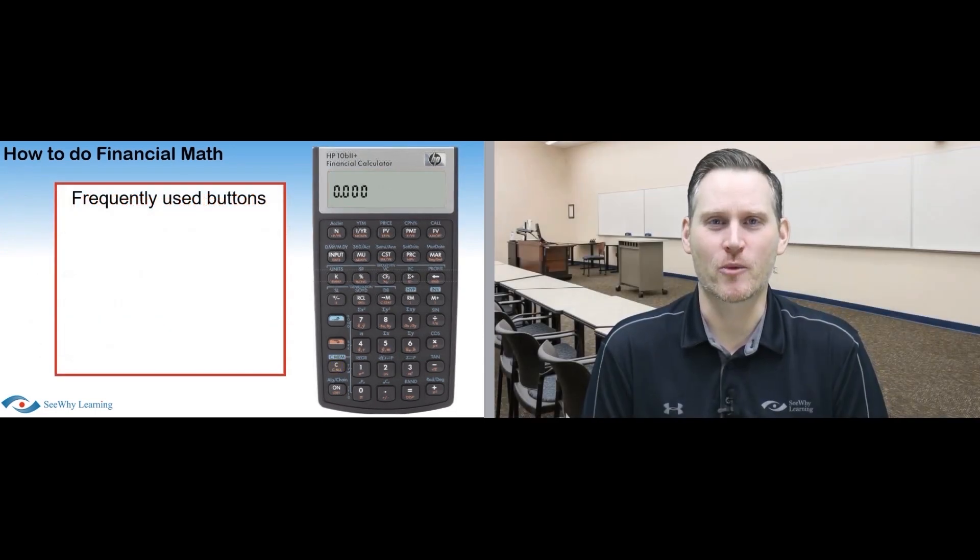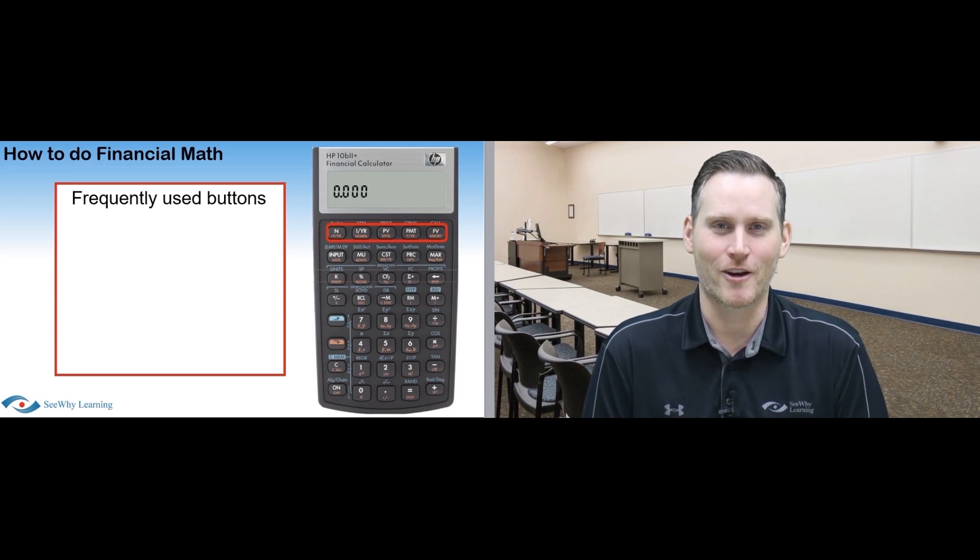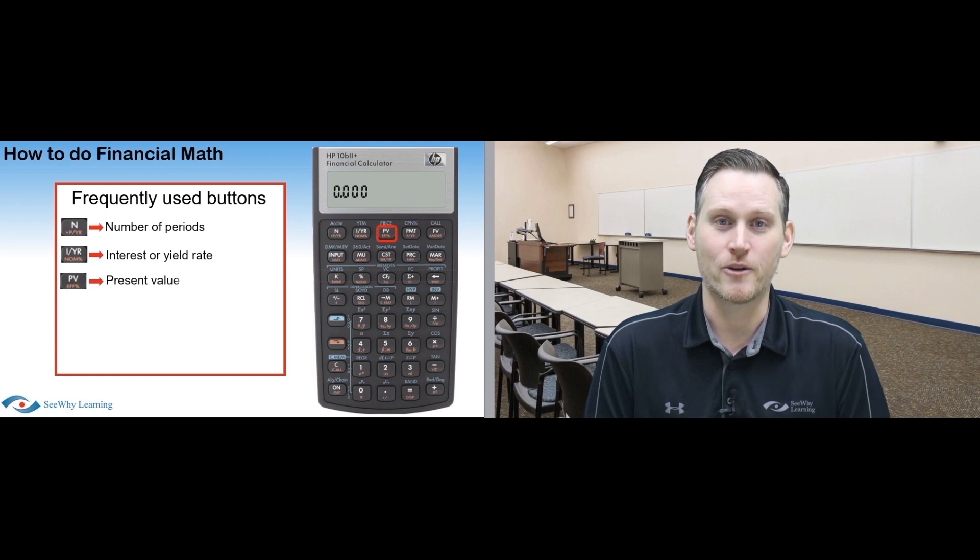Now, let's get familiar with the time value of money buttons that you'll use most frequently when doing financial math calculations. And fortunately, they're all presented in a single row near the top of your calculator, so they're easy to find. They are N, which stands for number of periods, IYR, which stands for interest or yield rate, PV, which stands for present value, PMT, which stands for payment, and FV, which stands for future value.